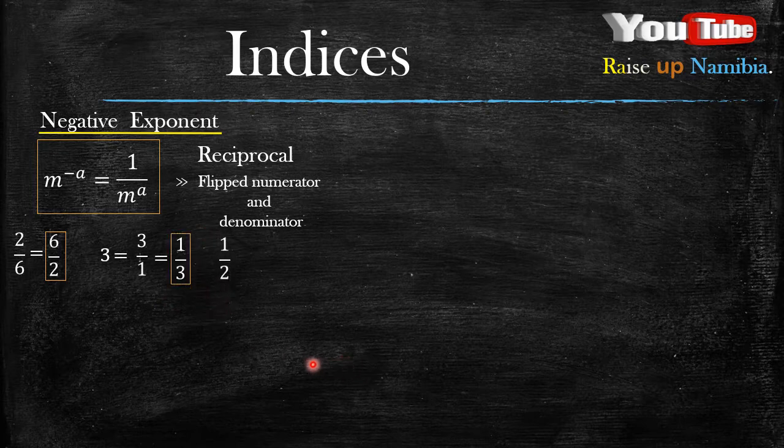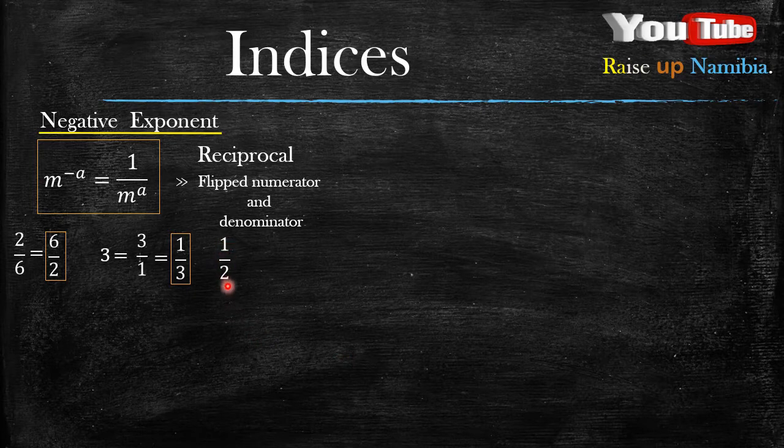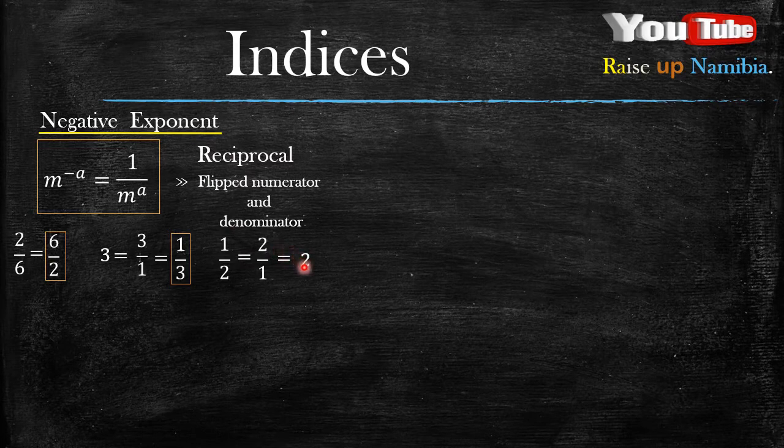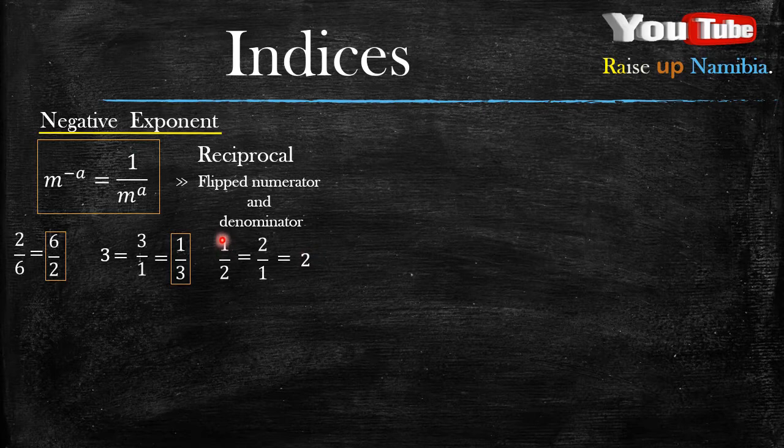So how about when you have 1 over 2? And you are asked for the reciprocal for 1 over 2. Now any number that is over 1, it will always be the number itself. So this was 1 over 2, 2 as a denominator.